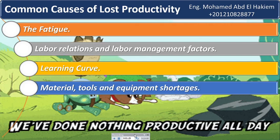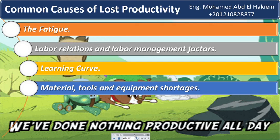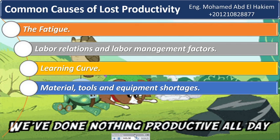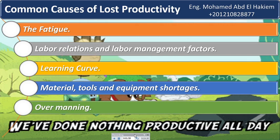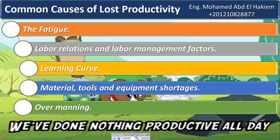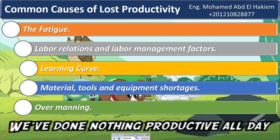Sixteen: material, tools, and equipment shortages. If material, tools, or construction equipment are not available to a crew at the right location and time, the crew's productivity will probably suffer as they may be unable to proceed in an orderly, consistent manner. Similarly, if the wrong tools or improperly sized equipment is provided, productivity may also suffer. Seventeen: overmanning. Productivity losses may occur when a contractor utilizes more personnel than originally planned or can be effectively managed, because the contractor may be forced to use unproductive labor, there may be shortages of materials, tools, or equipment, or the contractor may be unable to effectively manage the labor due to dilution of supervision.